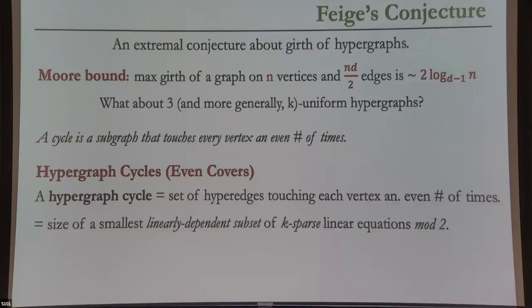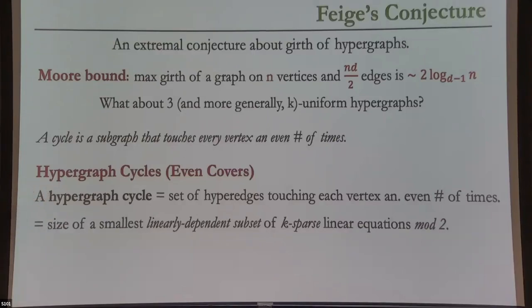We are basically generalizing from two-sparse to K-sparse linear equations — that's exactly what we're doing with hypergraph cycles. These are also called even covers; Feige studied them extensively and still calls them even covers.